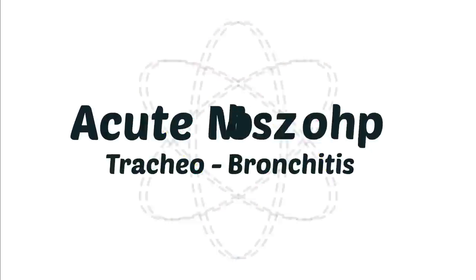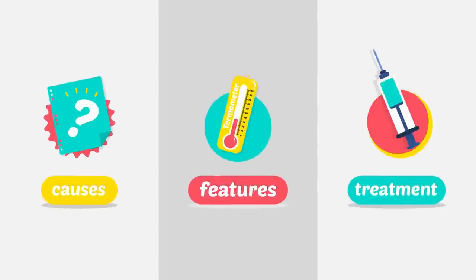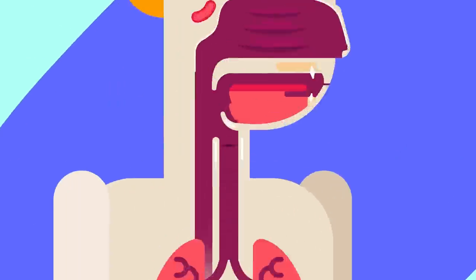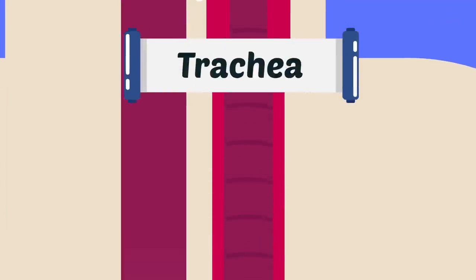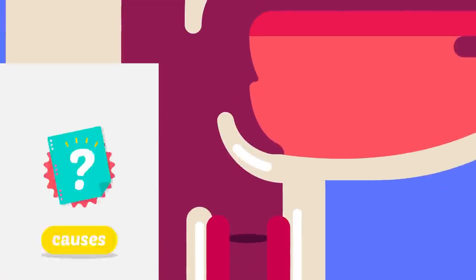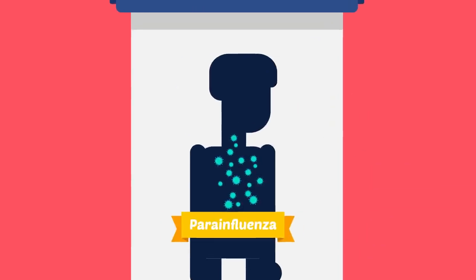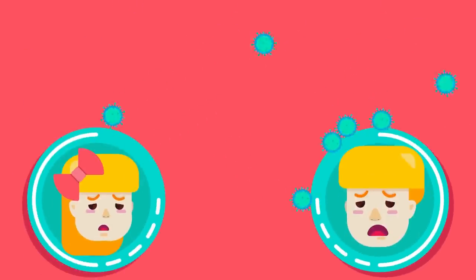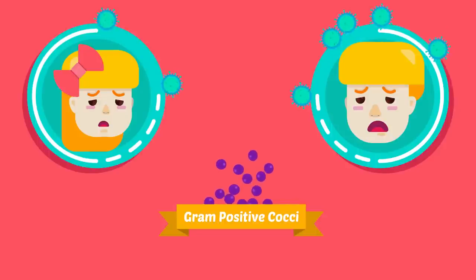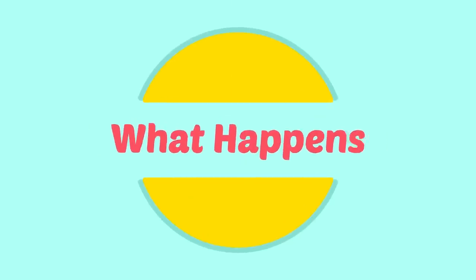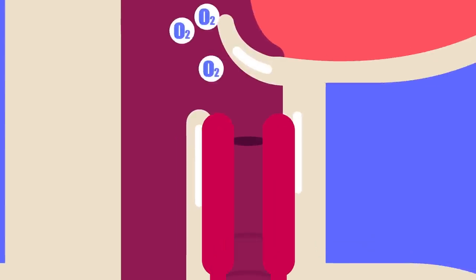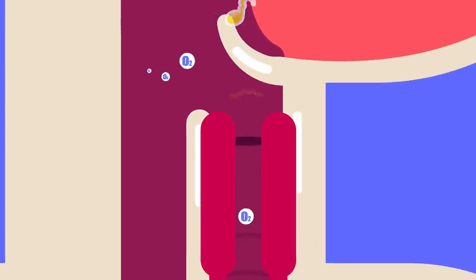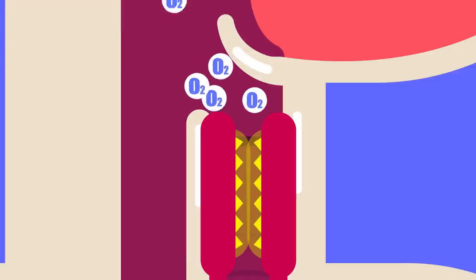Acute Laryngotracheobronchitis: an inflammatory condition of the larynx, trachea, and bronchi, more common than acute epiglottitis. It is mostly caused by viral infection — parainfluenza type 1 and 2 — affecting children between 6 months and 3 years of age, with male children more often affected. Secondary bacterial infection by Gram-positive cocci soon supervenes. The loose areolar tissue in the subglottic region swells up, causing respiratory obstruction and stridor. Thick tenacious secretions and crusts may completely occlude the airway.